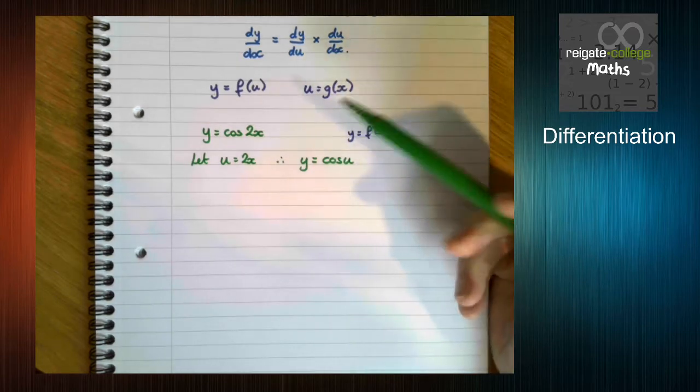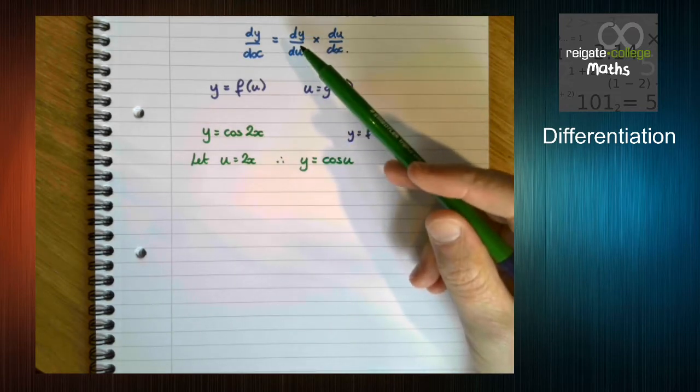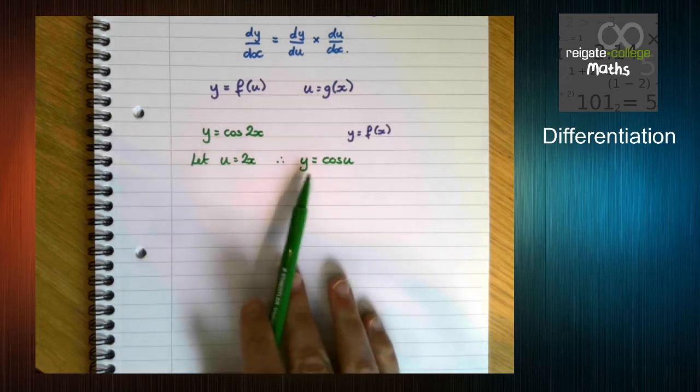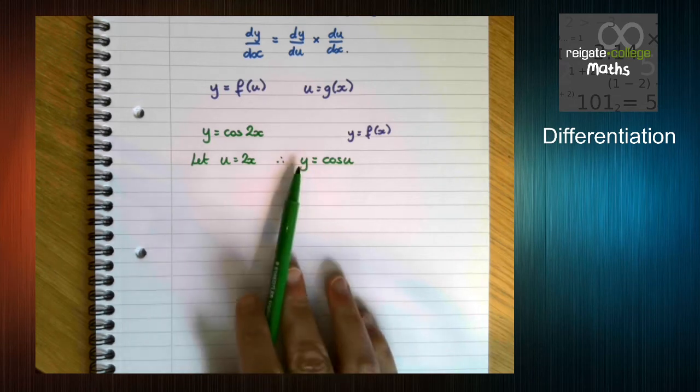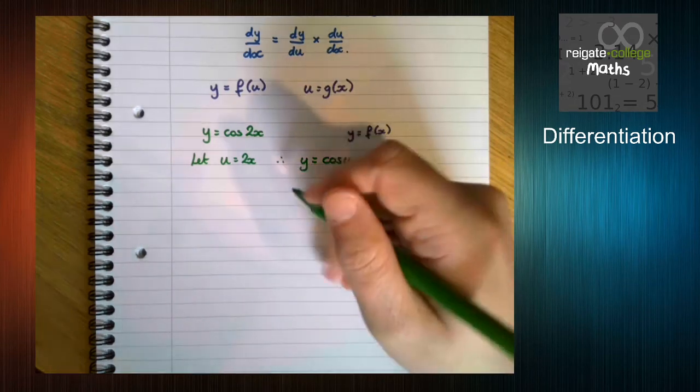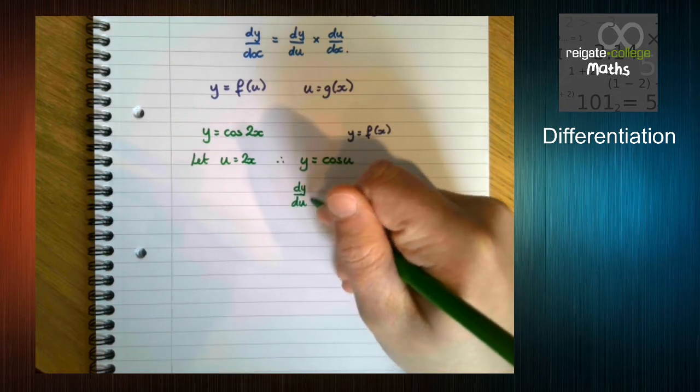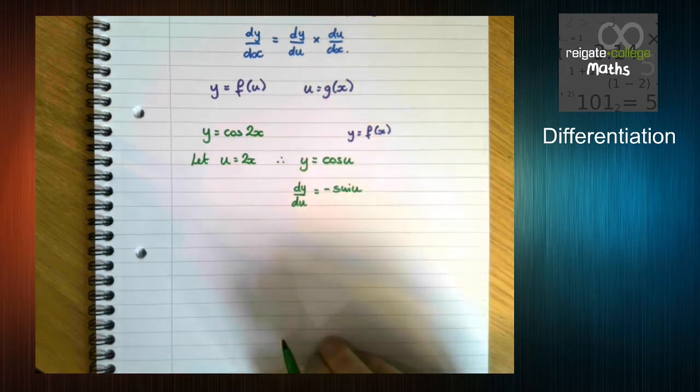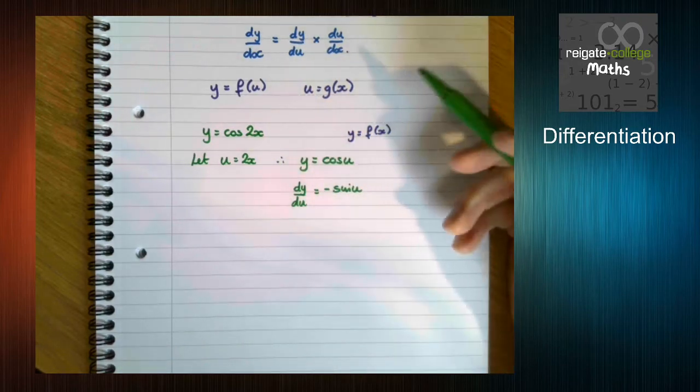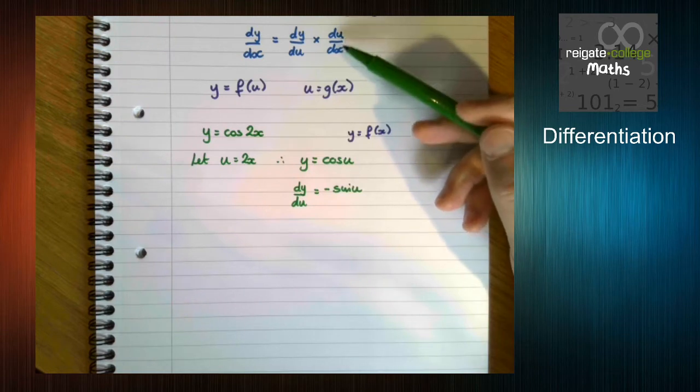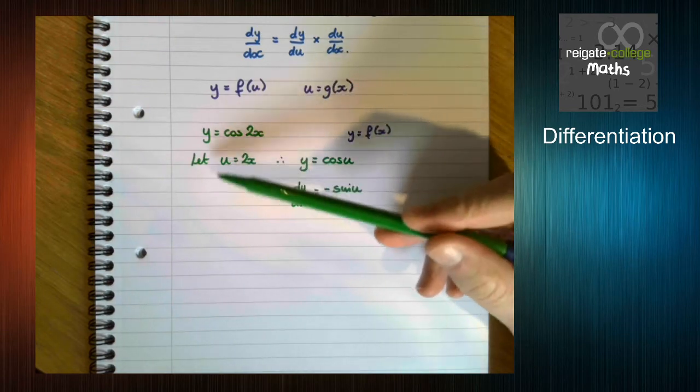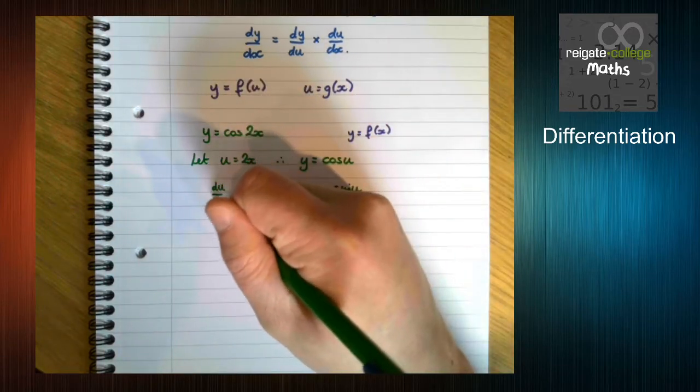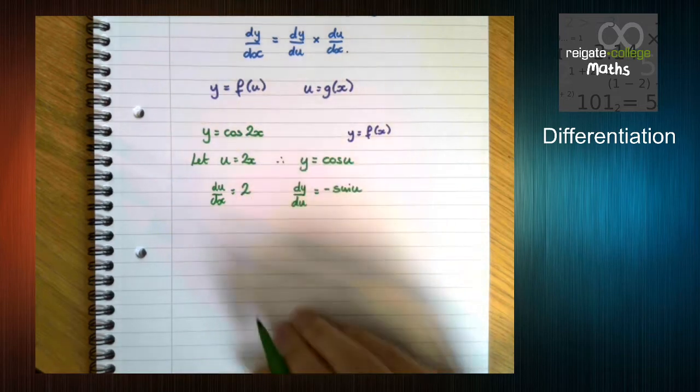Therefore y is the same as cos u. So using our formula we need dy/du. How are we going to get that? Well, differentiating y as a function of u. So cos u differentiates to minus sin u. We need du/dx. How are we going to get that? Well, differentiating this u function here. 2x differentiates to 2.